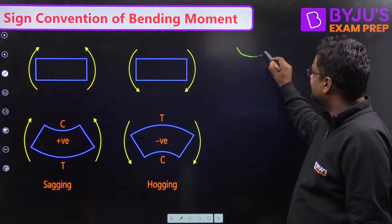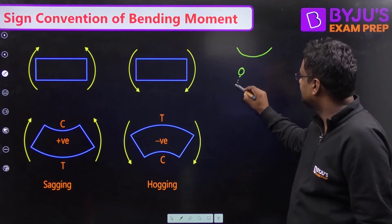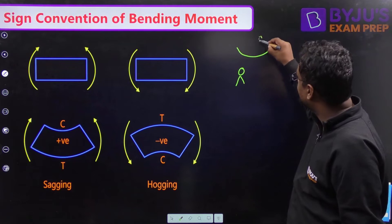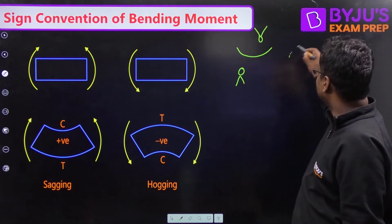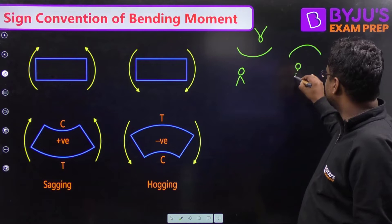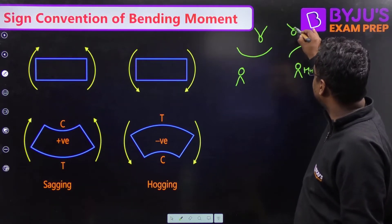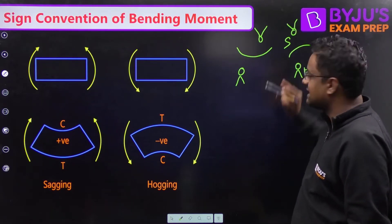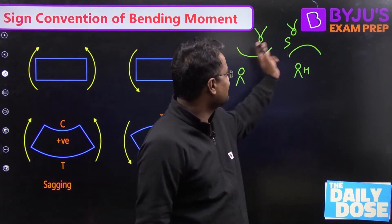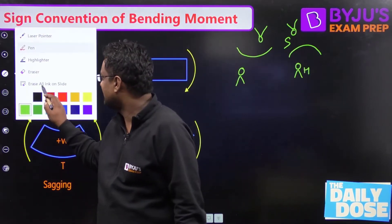You say this as sagging — okay, so one person is saying this is sagging, but the same beam for a person viewing it from the other side is hogging. Similarly, you are saying this as hogging — okay, for one person it is hogging, but the same thing for another person will be sagging. Now you will say, sir, what is this? These kinds of things are not possible. Let me tell you then.